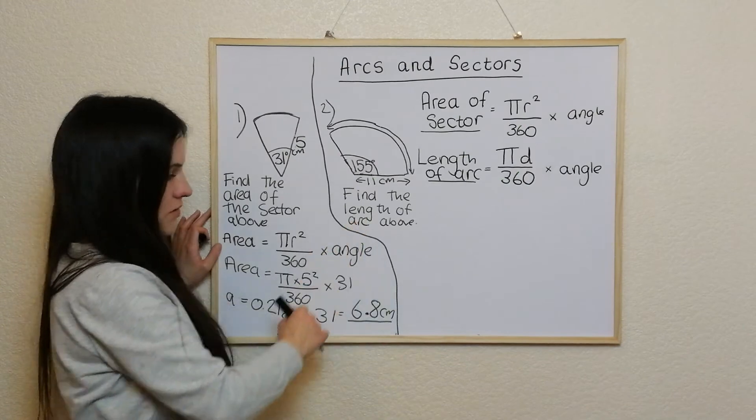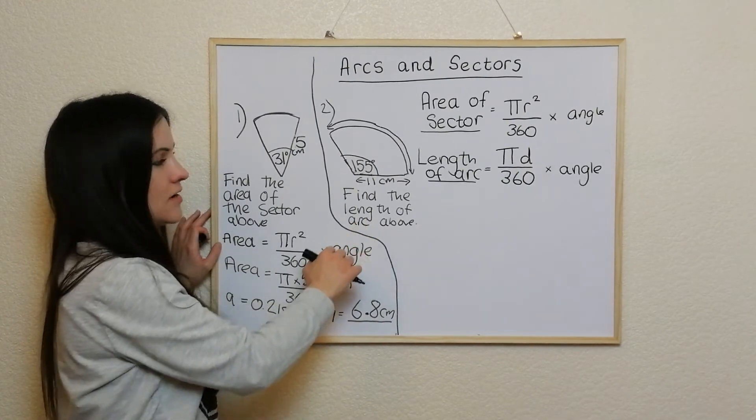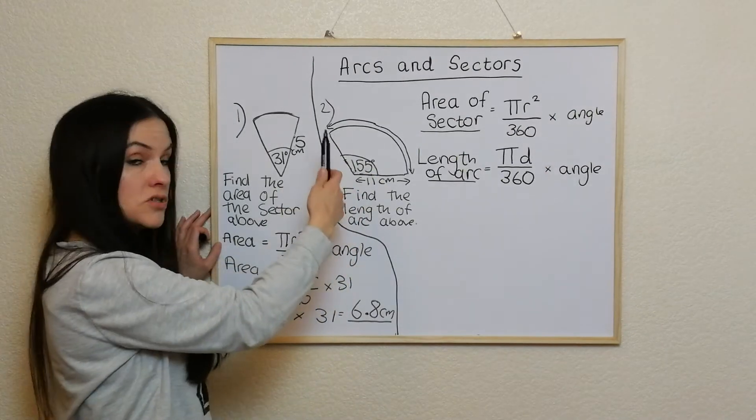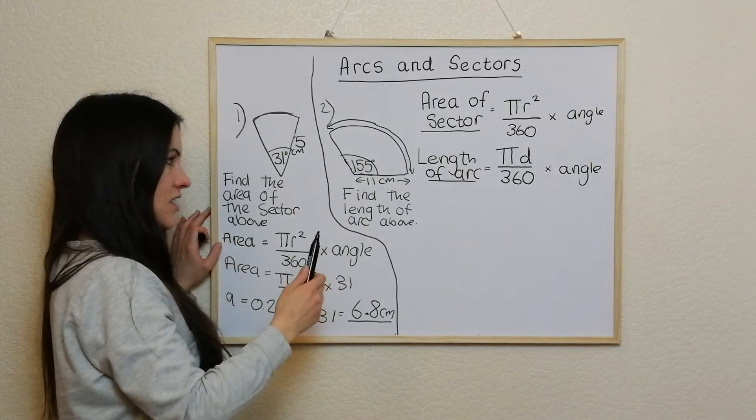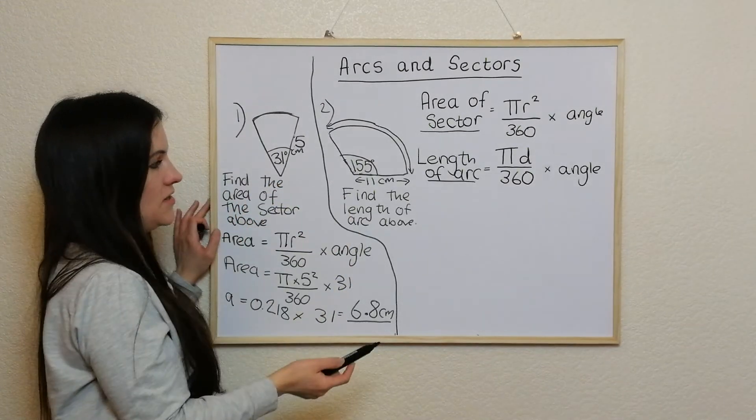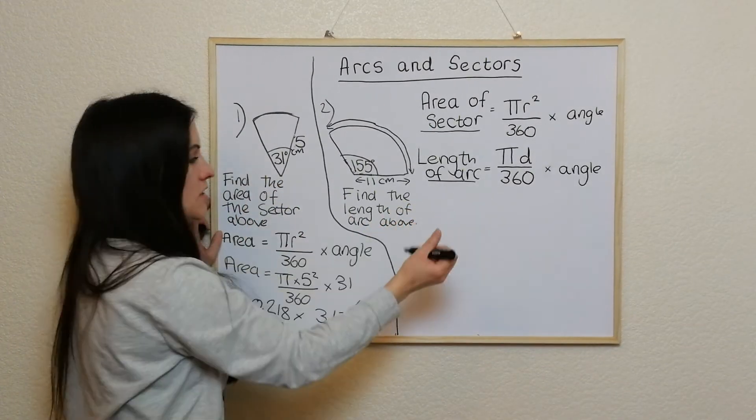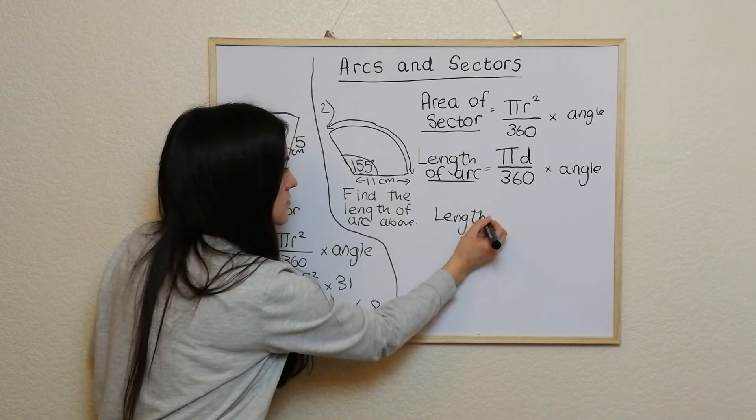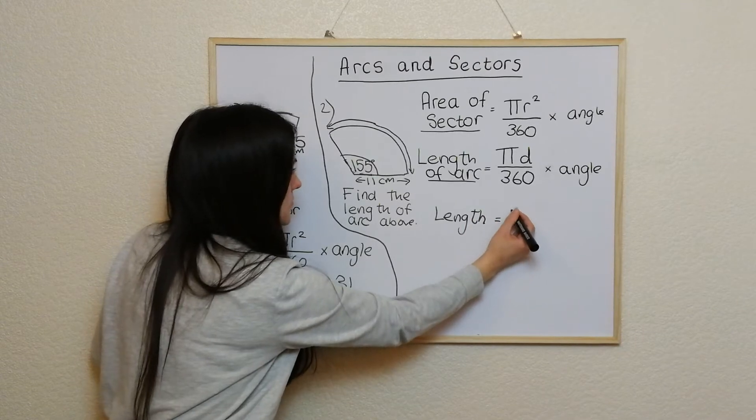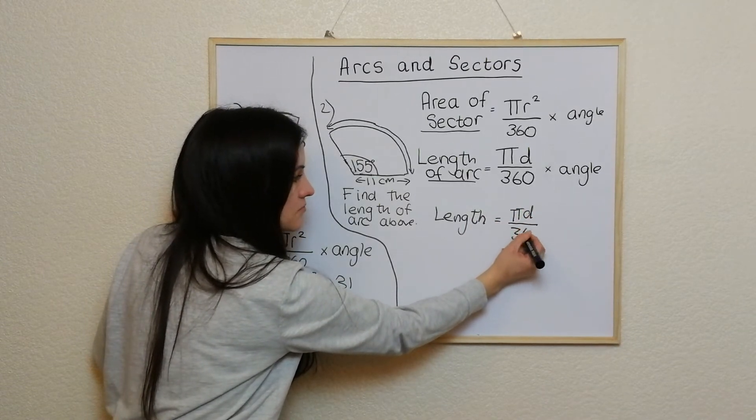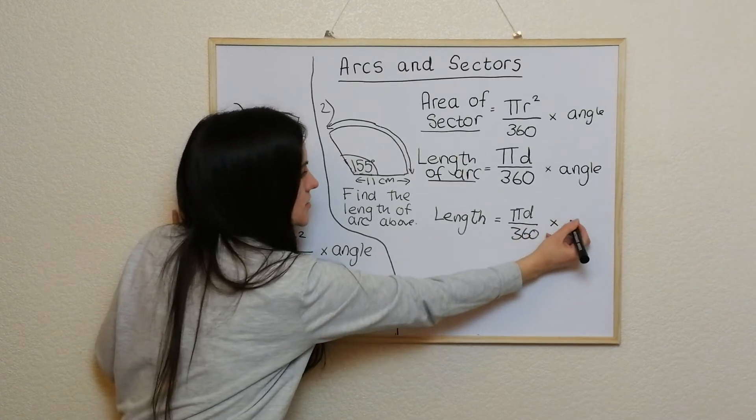If I'm doing this question here, it's the length of the arc. So it's like the pi d. So it's the idea that you get the circumference of the whole circle divided by 360 to get what the length would be at one degree and then just times it by the angle. So I'm using this formula here. So it's length equals pi d over 360 times angle.